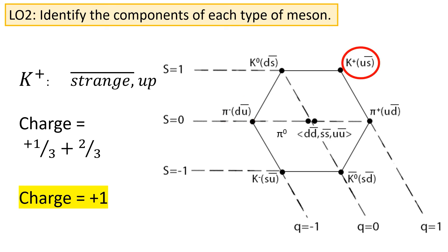Let's take another example. K-plus is made from an anti-strange and an up-quark, giving it a charge of plus a third, plus two-thirds, for an overall charge of plus one.